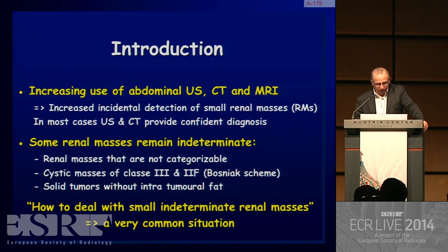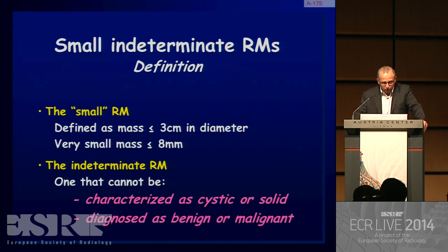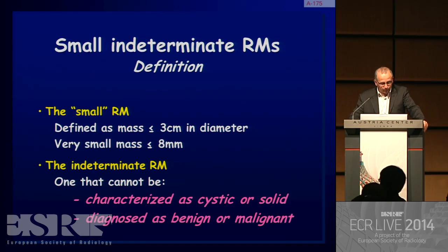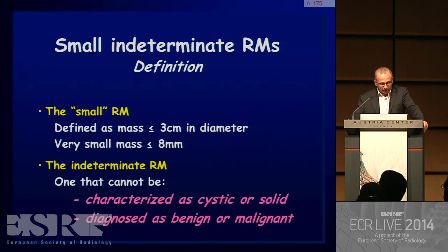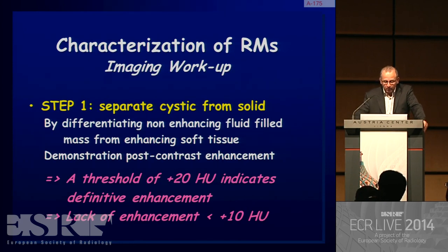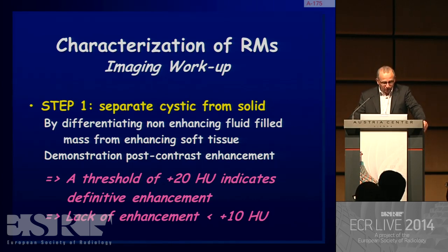This is a very common situation. The definition of a small renal mass is a mass below 3 centimeters in diameter, and we can subclassify that into very small masses below 8 millimeters. Indeterminate renal masses are those that cannot be characterized as cystic or solid, or cannot be diagnosed as benign or malignant. The first step in characterization is the separation between cystic and solid.